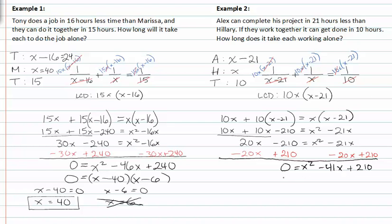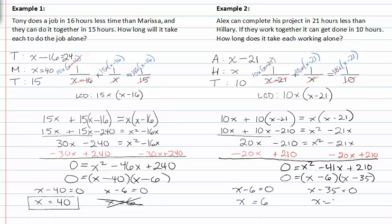This factors to (x minus six)(x minus thirty-five). Setting my factors equal to zero gives me x equals six and x equals thirty-five.